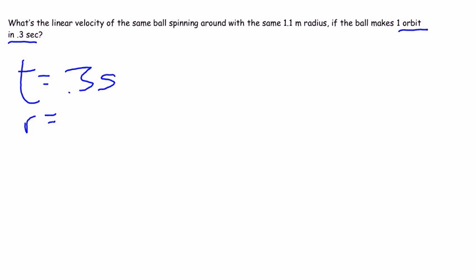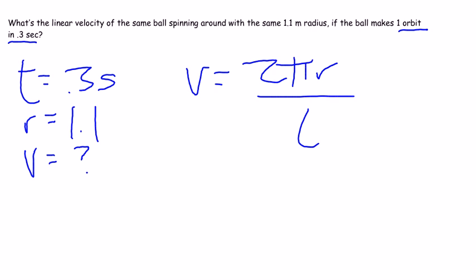Radius is still 1.1, and we are looking for linear velocity again. So in this case, we would have the other formula. We have velocity is equal to 2 pi r divided by t.